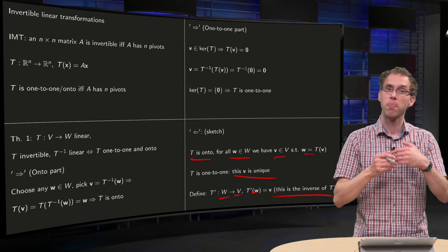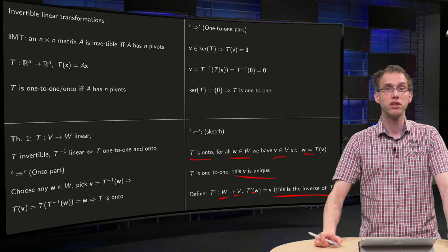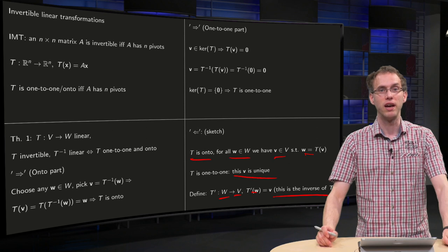So now you know, when is your transformation invertible? Well, if and only if the transformation is both one-to-one and onto.